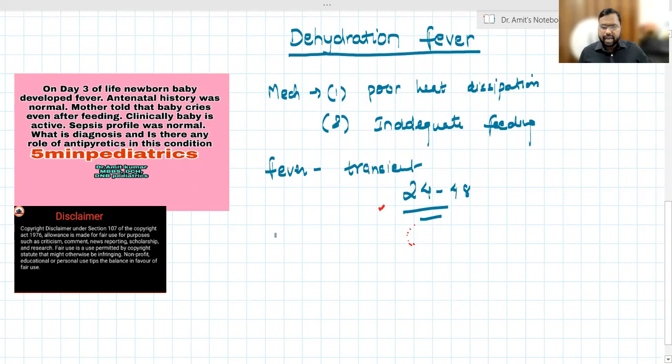How can this be managed? We have no role for antipyretics. Why so?